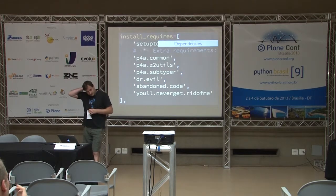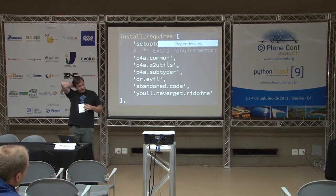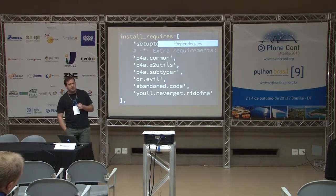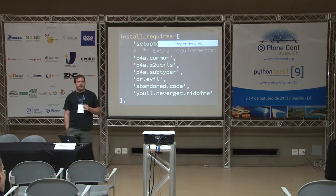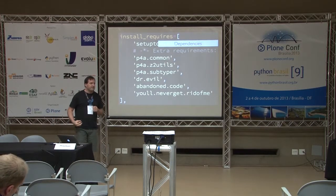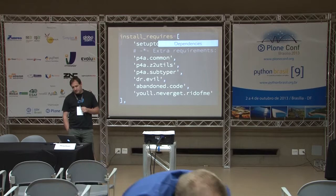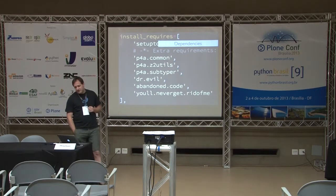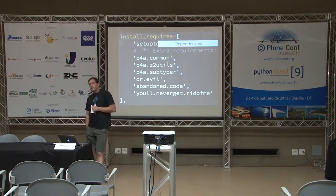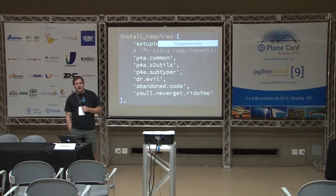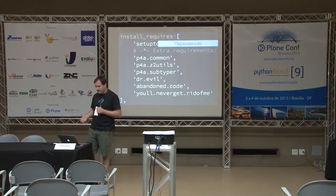Another thing to check is dependencies. Imagine you marry the person of your dreams and then realize their sibling just got out of jail and is crashing in your living room — that's the feeling you get when you install a product and it pulls in dependencies that now live with you. Check for other packages in setup.py. For example, FlowPlayer has a dependency on — whatever it's called — not bad, but you need to know about it.